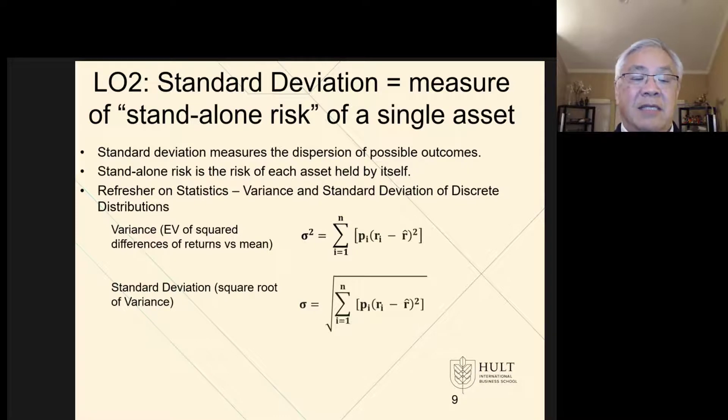One we use in investment analysis is the standard deviation, and it's a measure of the standalone risk of one particular asset. So if those distributions represent one stock, the expected value would be where the peak is, the mean, and the standard deviation represents the dispersion around that expected value.